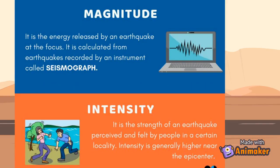In summary: magnitude is the energy released by an earthquake at the focus, and it is calculated from earthquakes recorded by an instrument called a seismograph. Intensity is the strength of an earthquake perceived and felt in a certain locality. Intensity is generally highest near the epicenter.